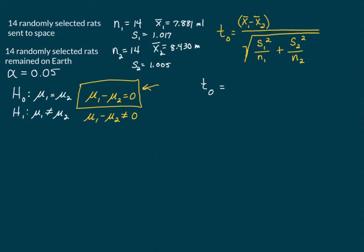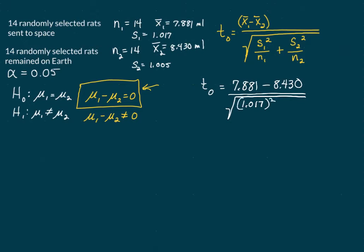Let's plug in our values. The mean of the first sample — the space rats — is 7.881, and the mean of the rats left on Earth is 8.430. That is divided by the square root of: the standard deviation of the first sample squared divided by 14, plus 1.005 squared divided by 14. That equals negative 1.437. That is our test value.